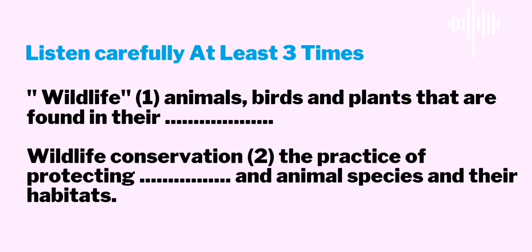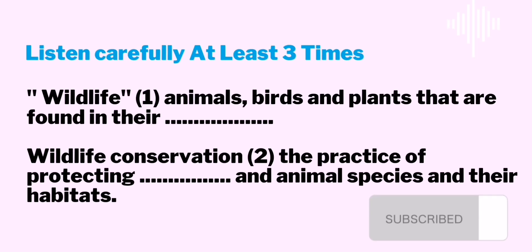How can we protect wildlife? There are three ways. First, we have to conduct surveys and collect information about wildlife, especially their number and growth. Second, we must ban the killing or capturing of endangered animals and birds.